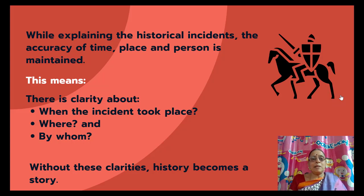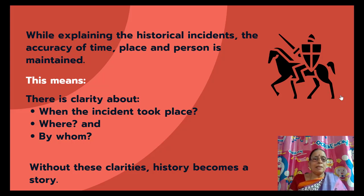Unless accuracy of time, place and person is maintained, it won't be history and you will not get systematic knowledge of history. This means there is clarity about when the incident took place, where, and by whom. You should clearly mention who was involved and where the incident took place. Without these clarities, history becomes a simple story.